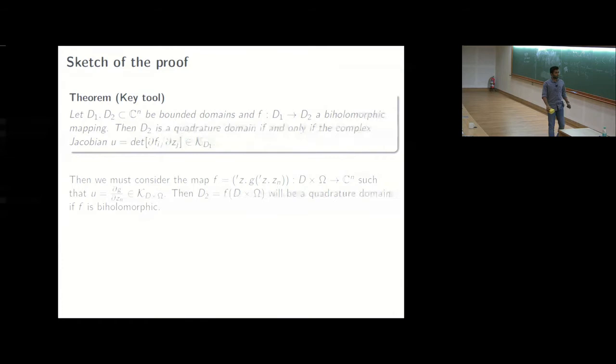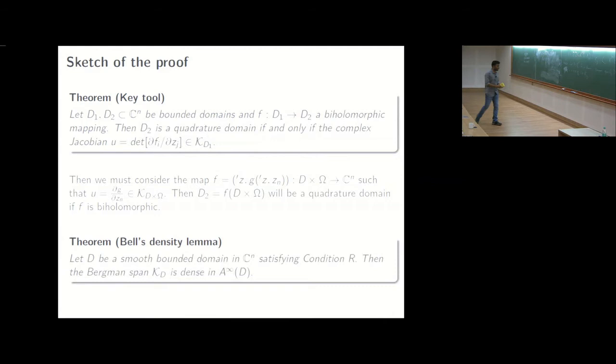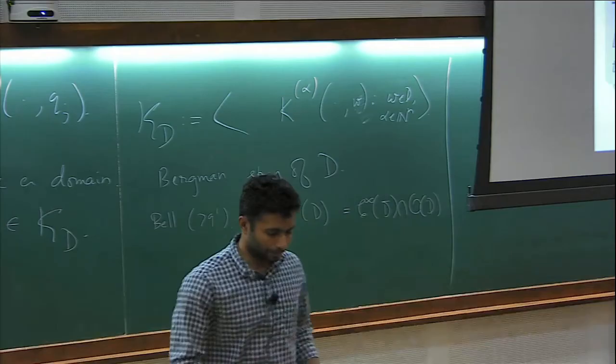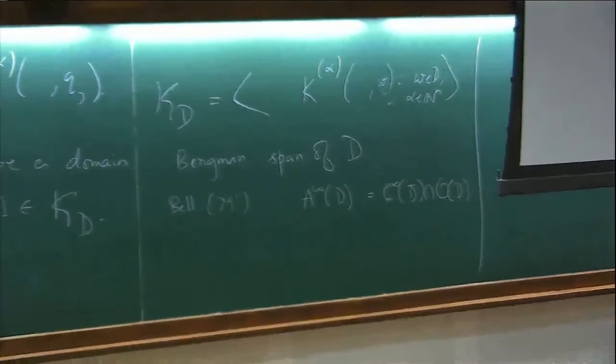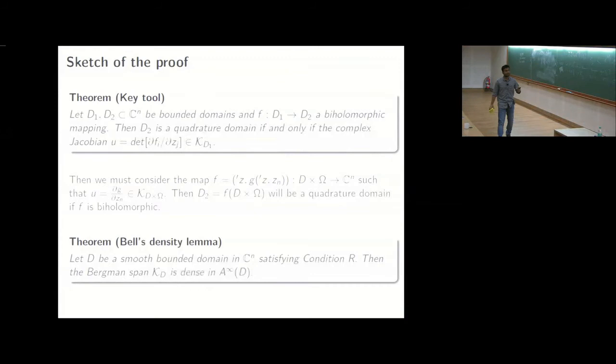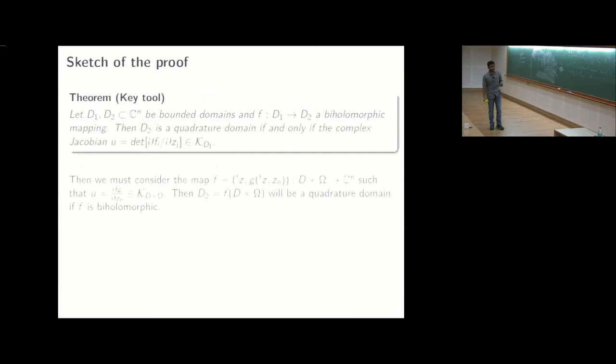And subsequently this statement is from the work in Lijoka's paper. So this says that if our domain satisfies condition r, then the Bergman span is dense in A infinity of t, which is c infinity of d bar intersected with O of t. So how do we use this? To use this, the first observation should be that d cross omega, which is the setup we are in, d cross omega does satisfy condition r. But then we started off with d a domain which satisfies condition r and omega a smoothly bounded domain.